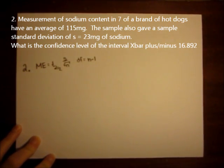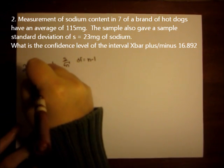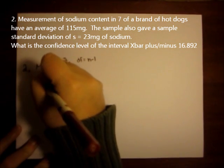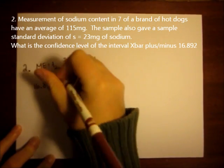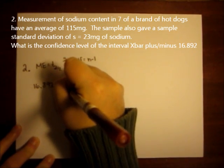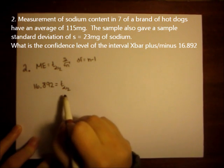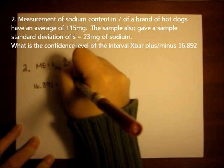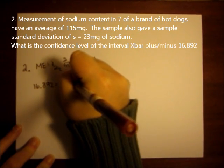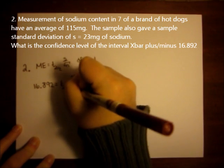So plugging in the numbers that we have, the margin of error is 16.892. I don't know what the t alpha over 2 is. If I knew the confidence level, I would know t alpha over 2. So that's what I'm actually solving for. And as before, the s or the sample standard deviation is 23 and n is 7.